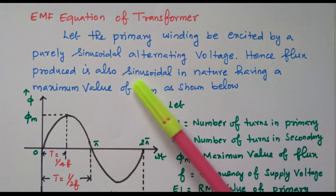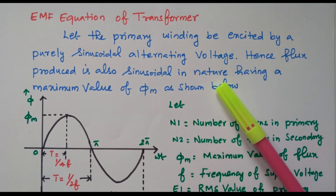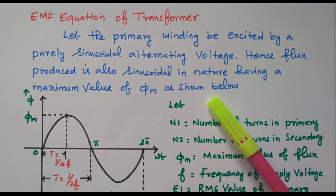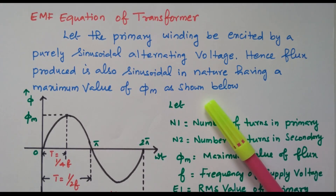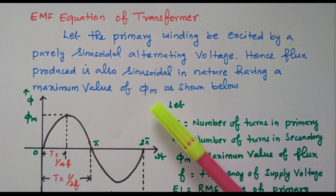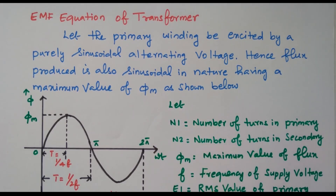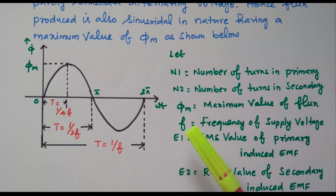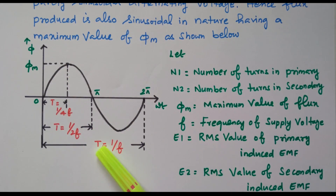Hence the flux produced is also sinusoidal in nature, having a maximum value of φM as shown. So when the alternating voltage is applied, the flux produced is also alternating with maximum value φM. The flux waveform is very similar to the current and voltage waveforms because alternating voltage is applied, alternating current is flowing, so the flux is also alternating.